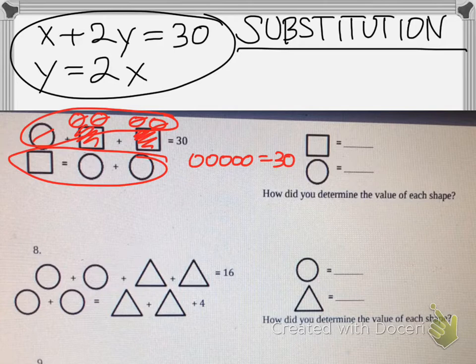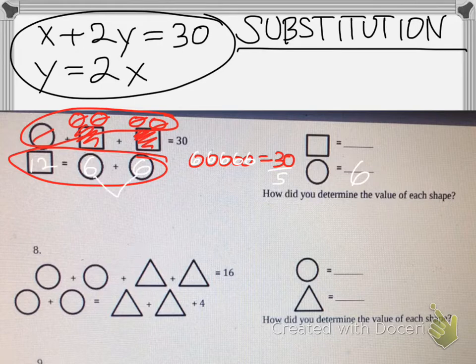Therefore, if we divide by five, thirty divided by five, each circle is going to be worth six. Done, almost. We found circles. Replace six where the circles are, and six plus six is twelve, so the square is worth twelve.